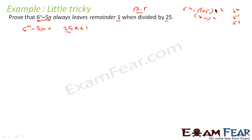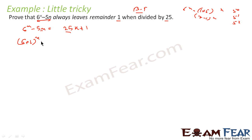So it will be good if we break 6 to the power n in terms of 5. Going by the question, just by gut feeling, 25 is 5 to the power 2, 5 is 5 to the power 1, and 1 is 5 to the power 0. So I will write 6 to the power n as 5 plus 1 to the power n. Therefore the LHS becomes 5 plus 1 to the power n minus 5n.